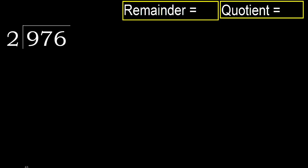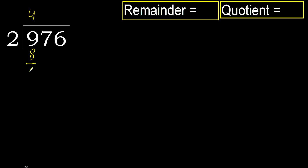976 divided by 2. 9 is not less, therefore start with 9. 2 multiplied by which number is nearest to 9 but not greater? 2 multiplied by 5 is 10 — 10 is greater. Multiplied by 4 is 8, it is not greater. Subtract: 9 minus 8 is 1.